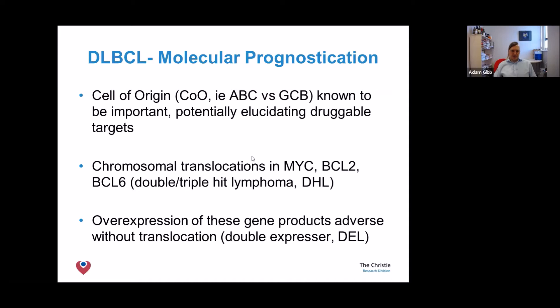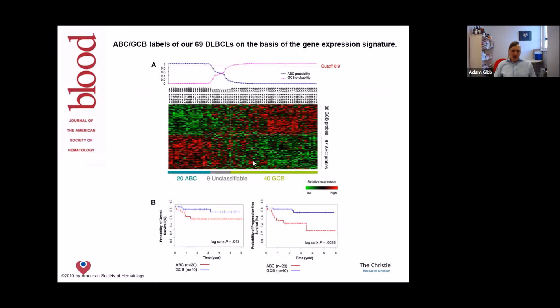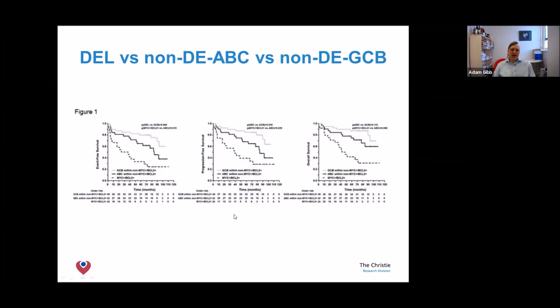The lymphoma cell of origin is coded ABC or GCB. Certain genes — MYC and BCL2 — are involved in how the lymphoma behaves. Fancy genetic work can divide cases between ABC and GCB subtypes, and the survival curves show that GCB disease has fewer relapses with R-CHOP than ABC disease. Similar work has been performed with MYC and BCL genes.